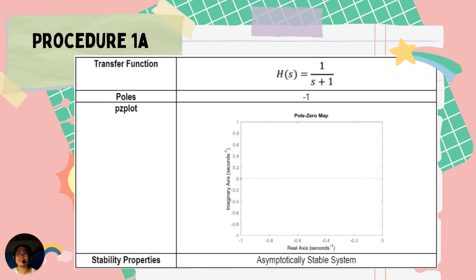For example procedure 1, there will be 4 transfer functions provided, and for each, the poles, PZ plot, and stability properties were determined — whether they are an asymptotically stable system, marginally stable system, or an unstable system.